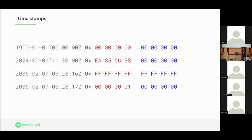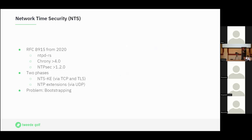The NTP timestamp rolls over in 2036. This is known, and all implementations should handle it so time can never jump backwards — it must be one second after 2036, not back to 1900 again. If you operate any big network infrastructure, I'd suggest taking a week off around that time, because I'm sure there's at least one implementation that didn't get this right. NTPv5 has an extra field for the era that should give us about 20,000 years of headroom — hopefully enough time before someone needs a new version.